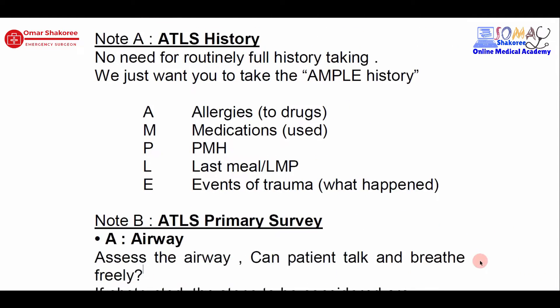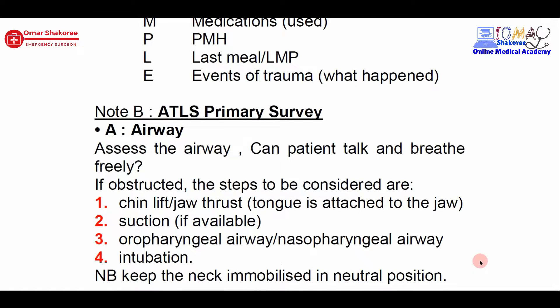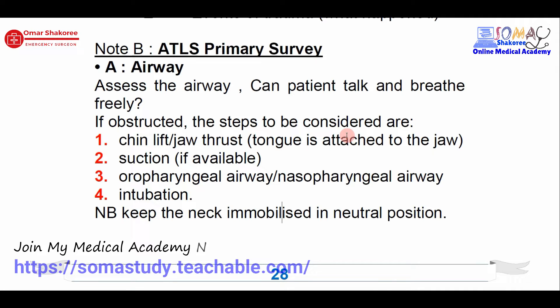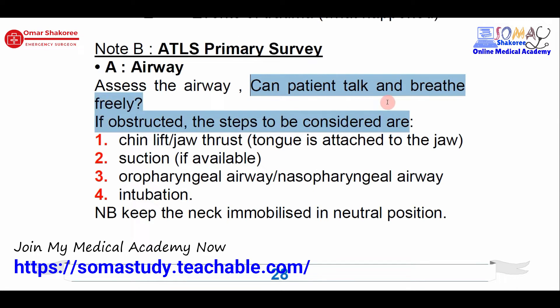After you took the AMPLE history, we move to the primary survey, which is ABCDE and F. Regarding the airway, let's suppose this is still our patient who is 30 years old, came to the emergency department after a motor accident and he can talk. If the patient can talk freely and breathe freely, this means he has an intact airway. So the first thing is to look for the airway — if the patient can speak, this means the airway is intact.